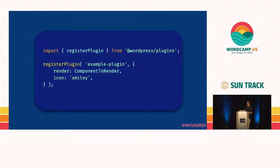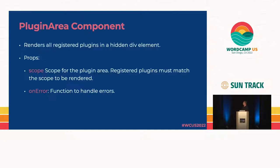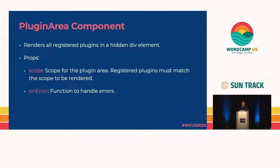Here's a simple example of registerPlugin. The PluginArea component is the last piece of the puzzle — it renders all the registered plugins inside a hidden div. It has two props: scope, and if you define a scope for a PluginArea, your registerPlugin calls have to also define that same scope. And there's an onError function that handles errors.